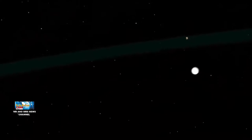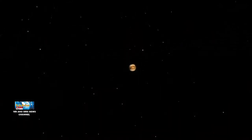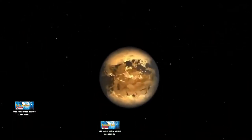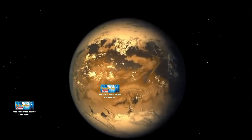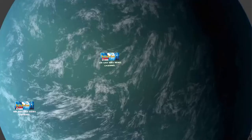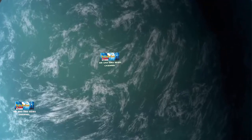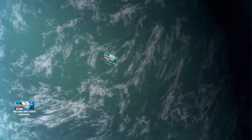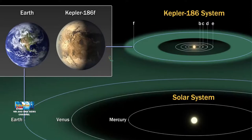Hanya sekitar 10% lebih besar dari bumi, Kepler-186F adalah planet terdekat dengan bumi dalam ukuran yang pernah ditemukan di zona layak huni bintangnya. Kepler-186F merupakan planet asing seukuran bumi pertama yang ditemukan di zona layak huni bintangnya.